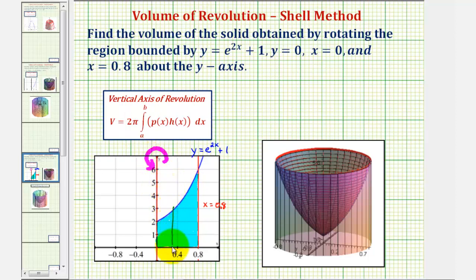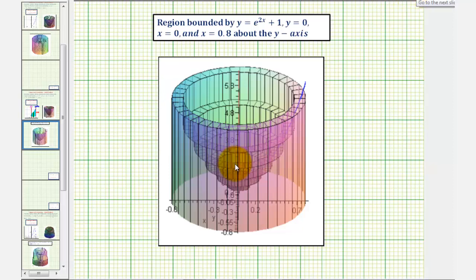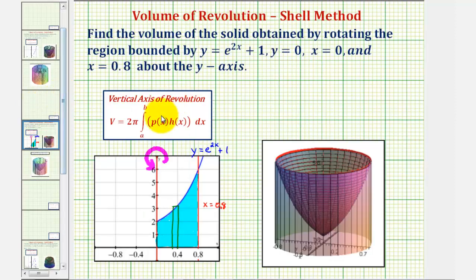A rectangle might look something like this, and if we rotate this about the y-axis it would give us one shell of the volume. To visualize this, here are several shells that could be used to approximate the volume of our solid. Notice that if we increase the number of shells, the volume of the shells would approach the volume of the solid. So if n is the number of shells and we take the limit as n approaches infinity of this sum, this is what gives us our definite integral.